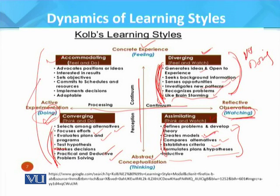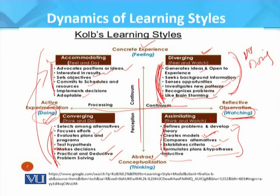Accommodating is feeling and doing. It involves advocating positions and ideas, being interested in results, setting objectives, committing to schedules and resources, implementing decisions, and being adaptable. Accommodating prefers trial and error rather than thought and reflection. It is good at adapting to changing circumstances, solving problems, and tends to be at ease with people. This is the four-stage Kolb learning style model: diverging, assimilating, converging, and accommodating.